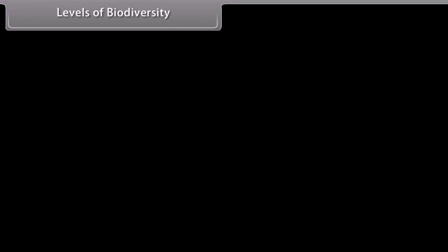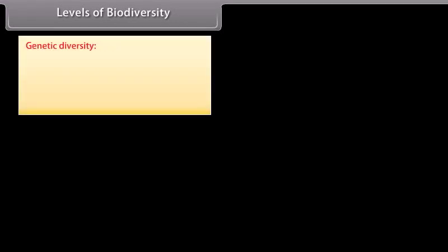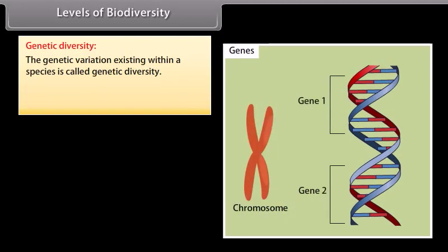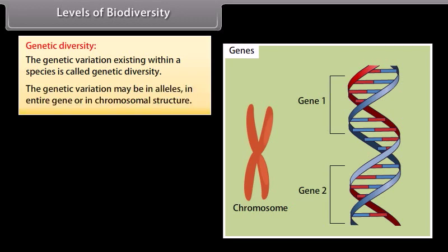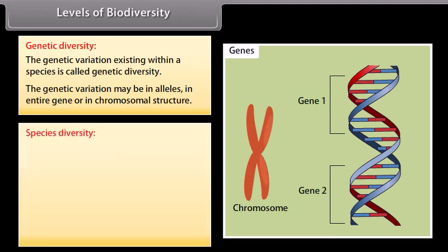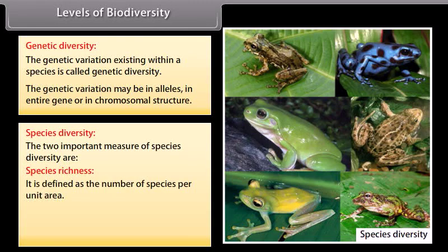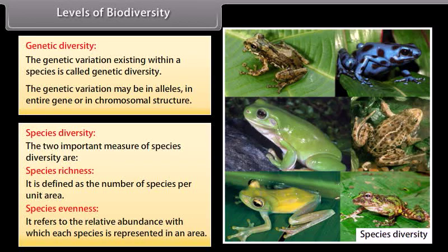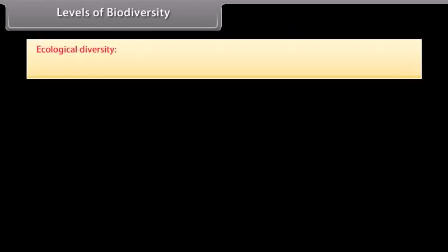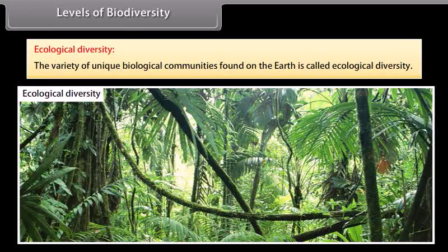Levels of biodiversity. Genetic diversity: the genetic variation existing within a species is called genetic diversity. It may be in alleles, in entire genes, or in chromosomal structure. Species diversity has two important measures: species richness, defined as the number of species per unit area, and species evenness, which refers to the relative abundance with which each species is represented in an area. Ecological diversity: the variety of unique biological communities found on the earth is called ecological diversity.